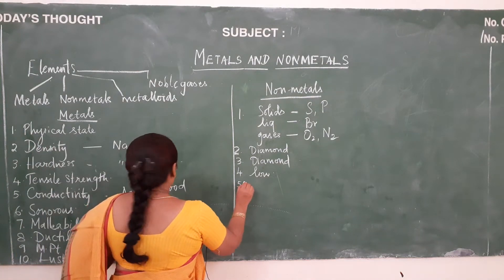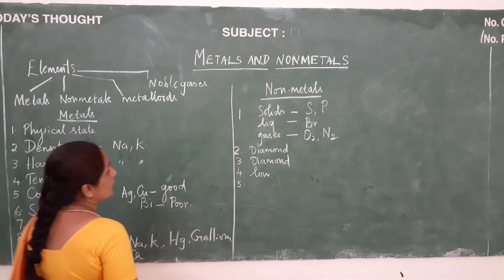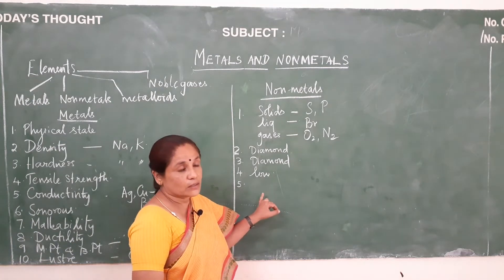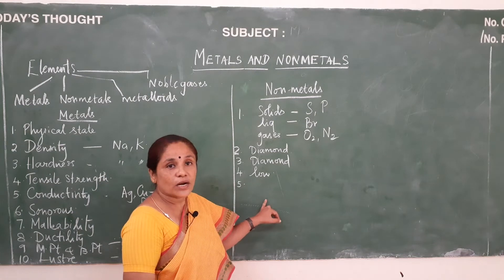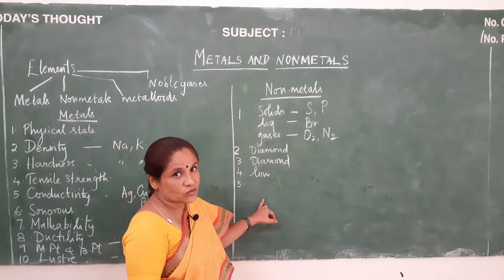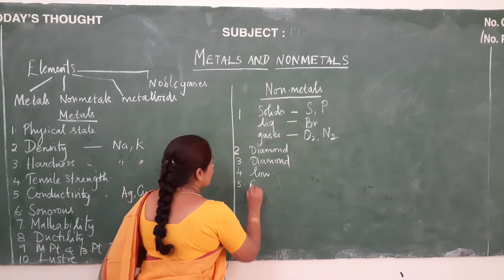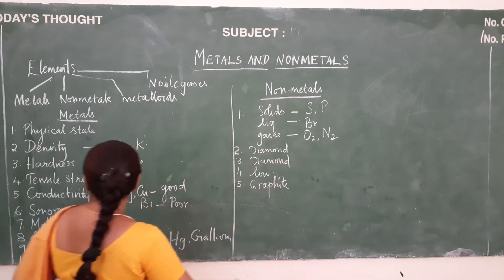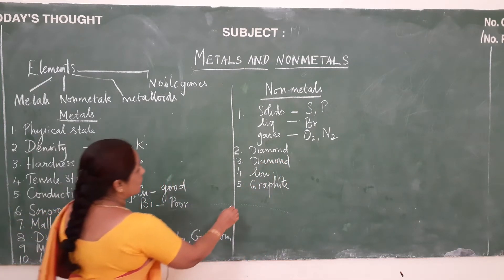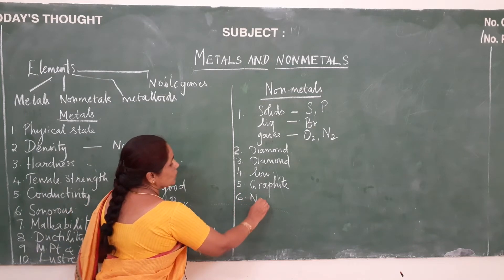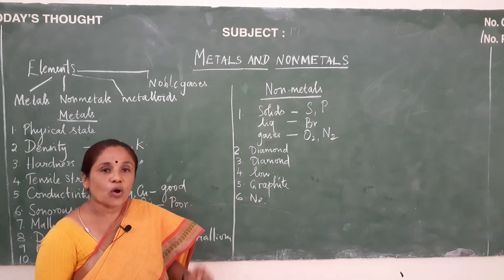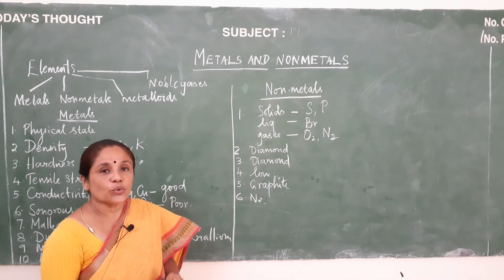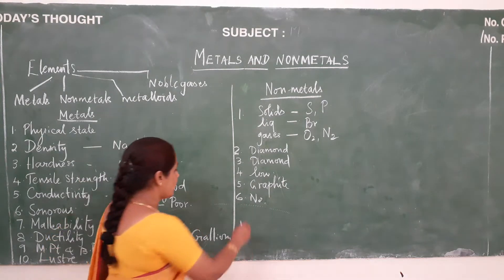The next property is conductivity. Nonmetals have low conduction for heat and electricity. There is an exception: graphite is a good conductor of electricity. Next is the sonorous property. Nonmetals do not possess the sonorous property — when nonmetals are hit hard, they do not produce any sound. So they lack sonorous property.